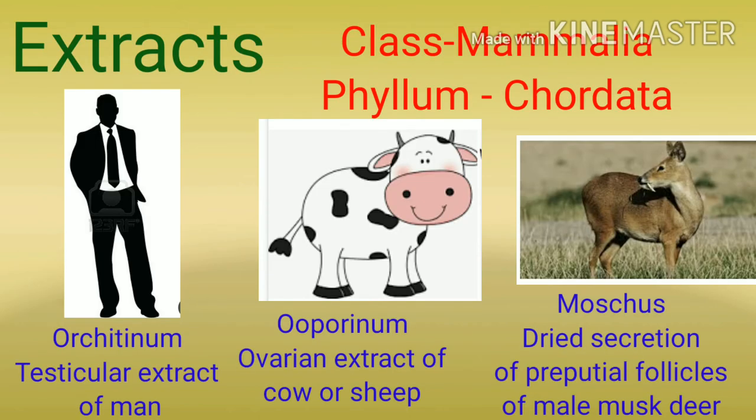अब हम बात करते हैं extract से बनने वाली homeopathic medicines की। Class दोनों की Mammalia और phylum Chordata रहेगा। First one is Orgetinum, that is a testicular extract of men. Then Oophorinum, that is an ovarian extract of cow or sheep. And the last one is Moschus, that is a dried secretion of preputial follicles of male musk deer।